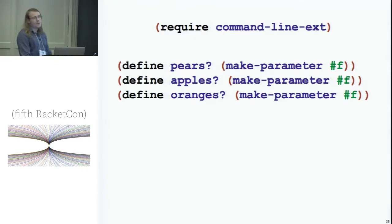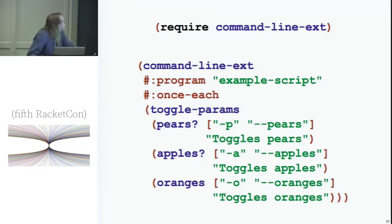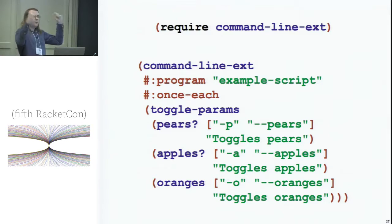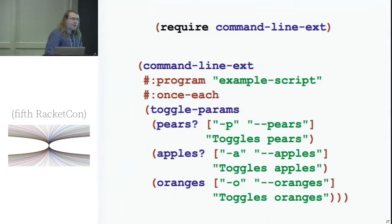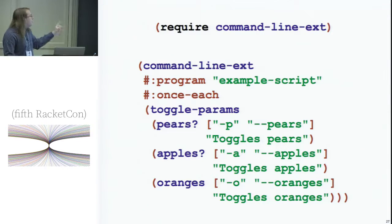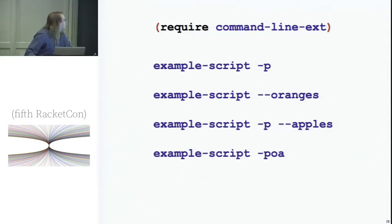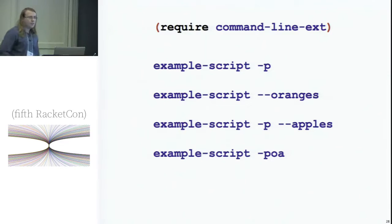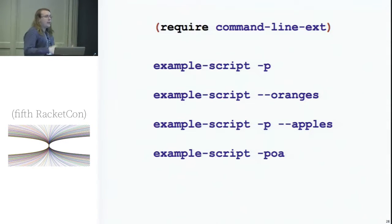Suppose we have three boolean parameters that you want to toggle with flags. You make a parameter for each one, they all default to false. With command-line-ext, there is a toggle-params command line expander where you give it a bunch of pairs of parameter, the flags, and a description. It transforms that at compile time into the form that the Racket command line expects, and it will automatically toggle those parameters when you pass in those flags. You can call it like this, and it does all the same things the base Racket command line library does — single switches group, you get the end dash-dash switch, all the standard behavior — and you don't have to write any of that mushy imperative code that sets parameters when parsing command line stuff.